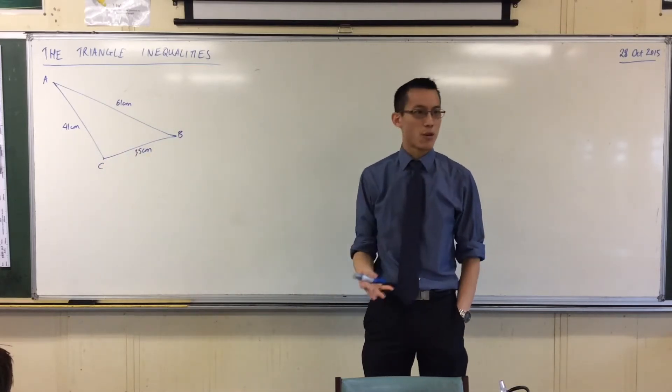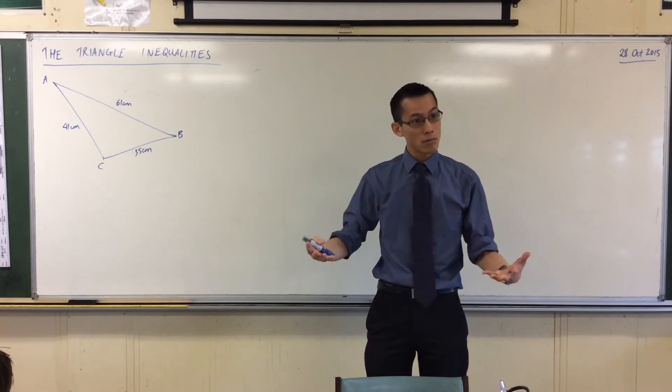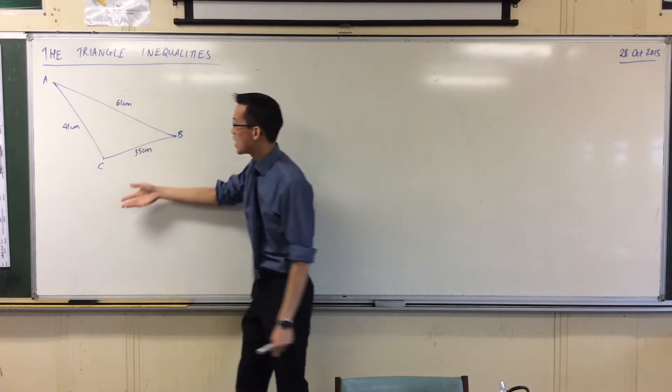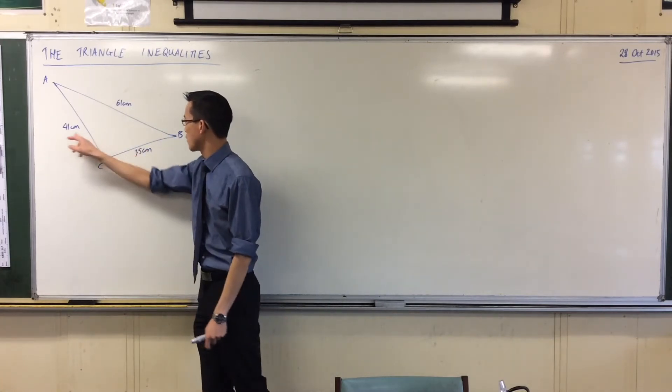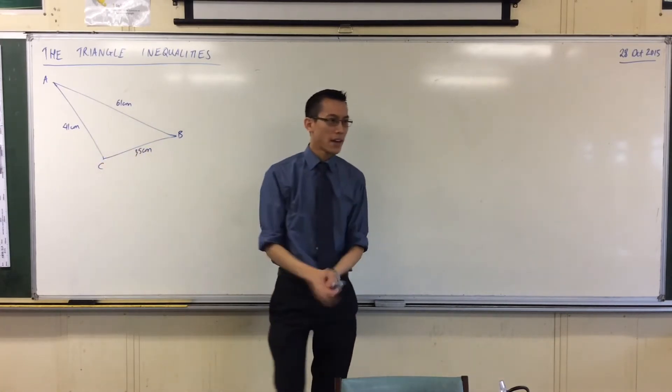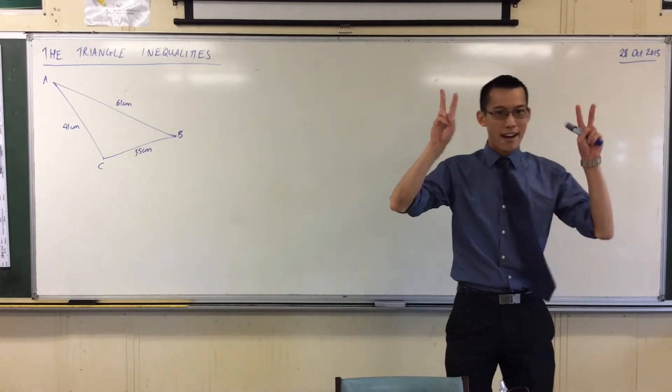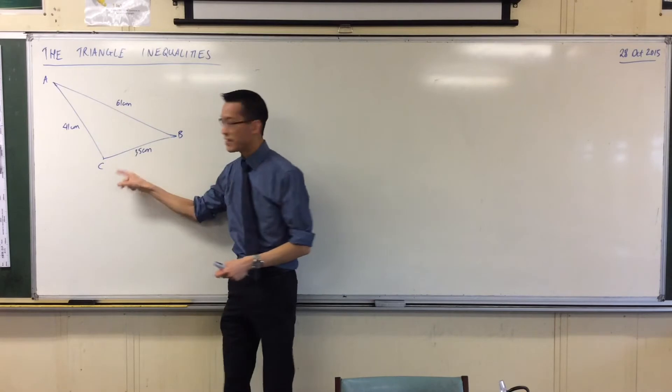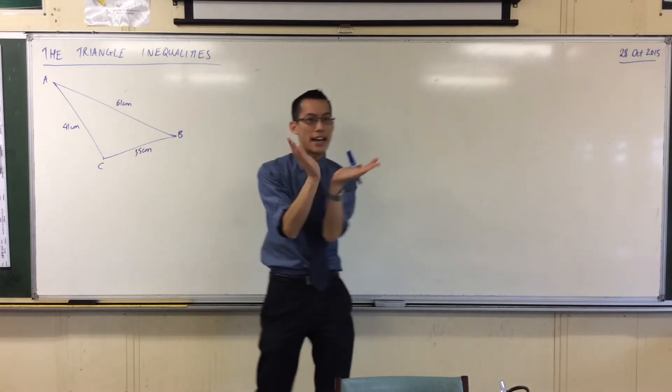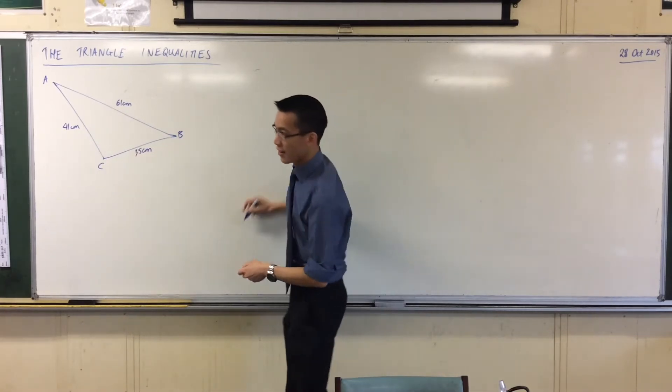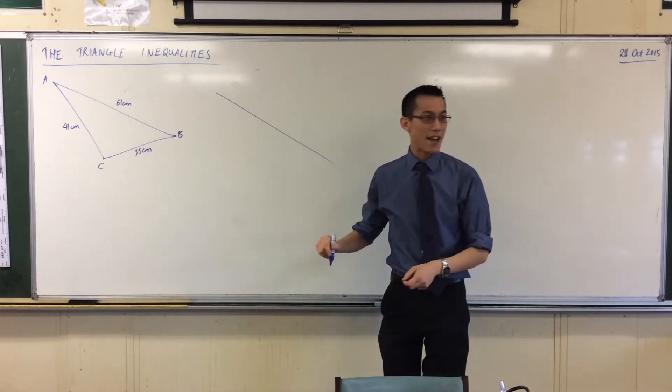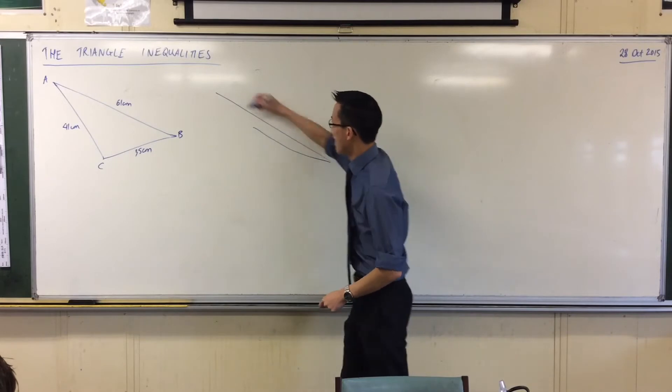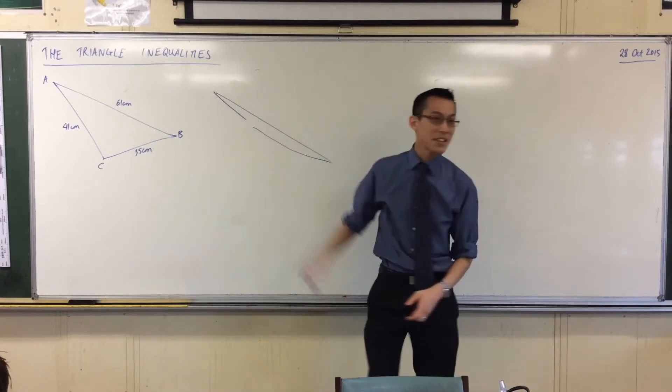You've got 61 here. This side has to be shorter than, or in a weird case, equal to the sum of these two sides added together. Does that make sense? It's got to be less than or equal to. It can't possibly be more. Because if you want to think about it this way, if you've got this side here, and it would say, what's the sum? It's 76 here. If my AB was 80 centimetres, there's no way that AC and BC with their current lengths could reach out and connect and make the triangle.